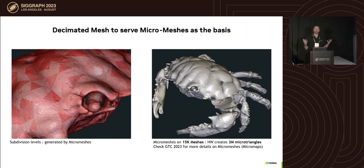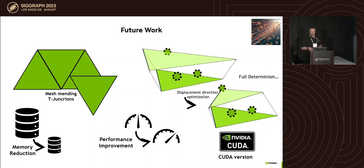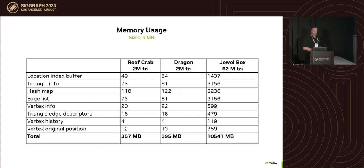For future work, we want to solve T-junctions, address mesh mending issues, reduce memory usage, improve performance — the implementation is currently in Vulkan but we'd like to add CUDA support and a solution for non-graphics APIs. We're also working on displacement, specifically a bounding-box prism for min/max displacement computation.